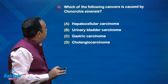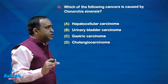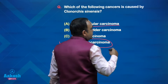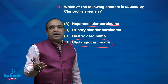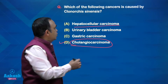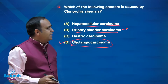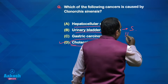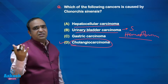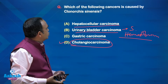The next question is very easy: which of the following cancers is caused by Clonorchis sinensis? The answer is biliary tract cancers — cholangiocarcinoma and to some extent gallbladder carcinoma. Hepatocellular carcinoma is most commonly caused by cirrhosis, alcoholic as well as post-hepatitis B and C virus infection. Urinary bladder carcinoma is caused by smoking, chemical dye exposure, and the parasite Schistosoma haematobium. Gastric cancers are linked to diet, smoking, alcohol, H. pylori, and NSAIDs.